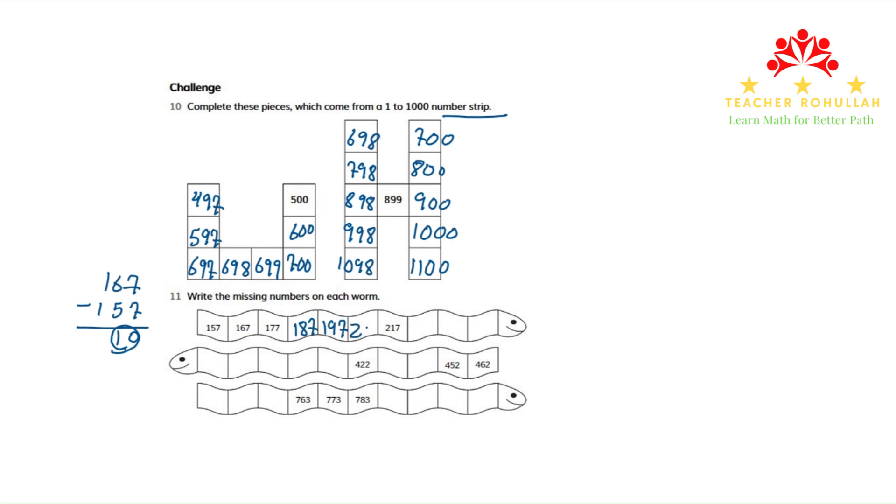Then 207, then 217, 227, 237, and 247. It means each time we added 10 to the previous number to get the next number, and again added 10 to the previous number to get the next number. Each time we added 10 to move to the next part of the worm.